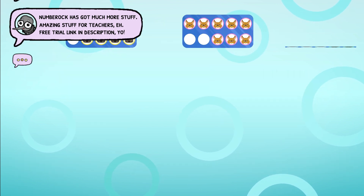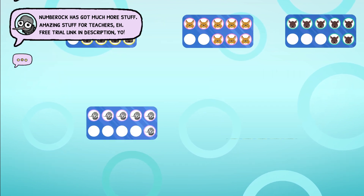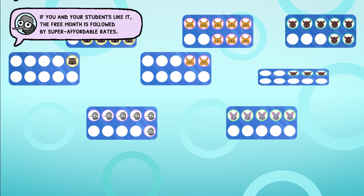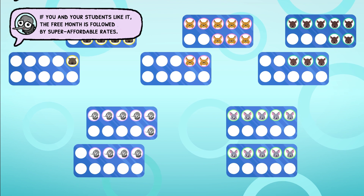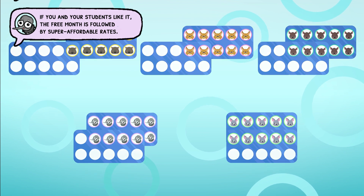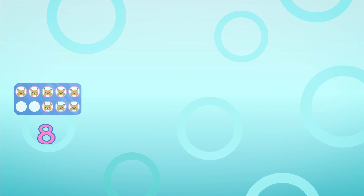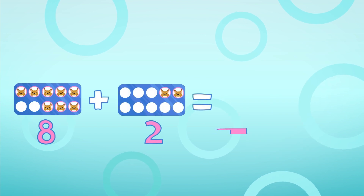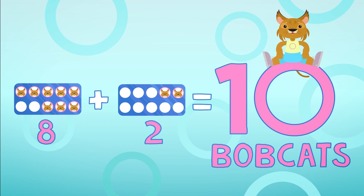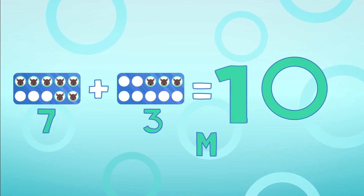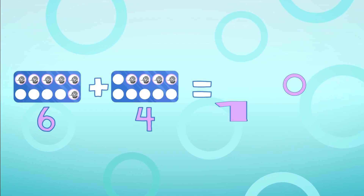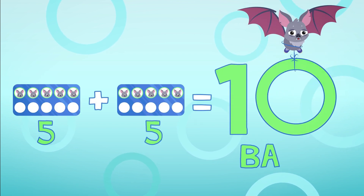Let's fill in each 10 frame by matching cards that are the same. 9 and 1 makes 10 wombats, 8 and 2 makes 10 bobcats, 7 and 3 makes 10 muskrats, 6 and 4 makes 10 bats, 5 and 5 makes 10 bats.